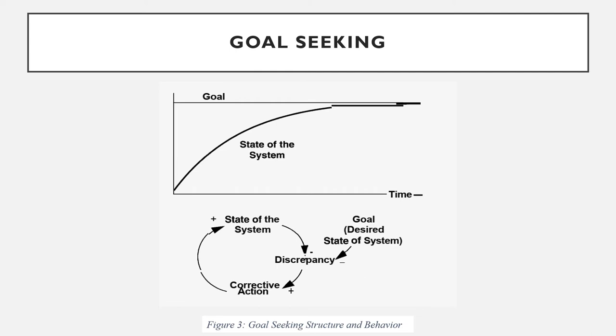Negative loops seek balance, equilibrium, and stasis. Negative feedback loops act to bring the state of the system in line with a goal or desired state. They counteract any disturbances that move the state of the system away from the goal.